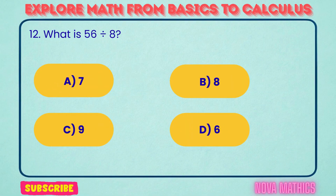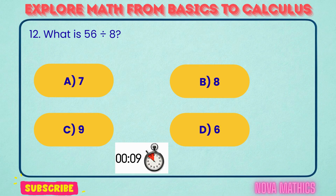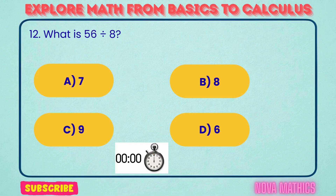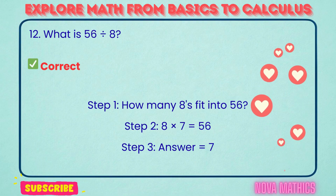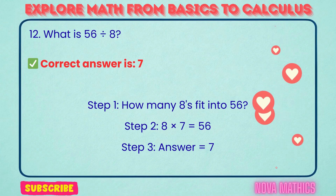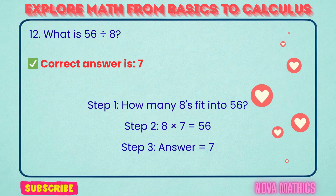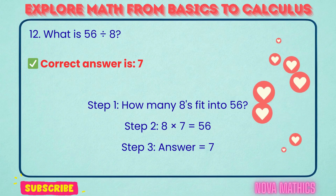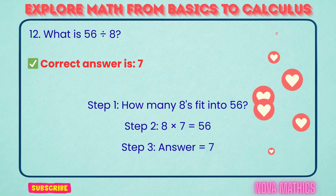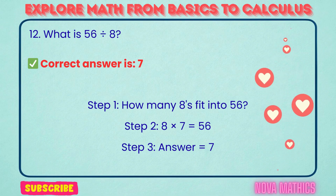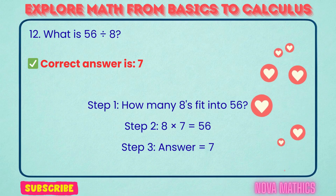12. What is 56 divided by 8? Correct answer is 7. 56 divided by 8 equals 7. We find this because 8 times 7 is 56.